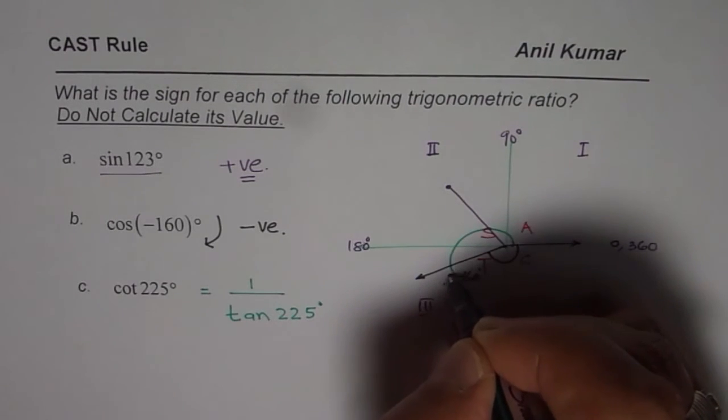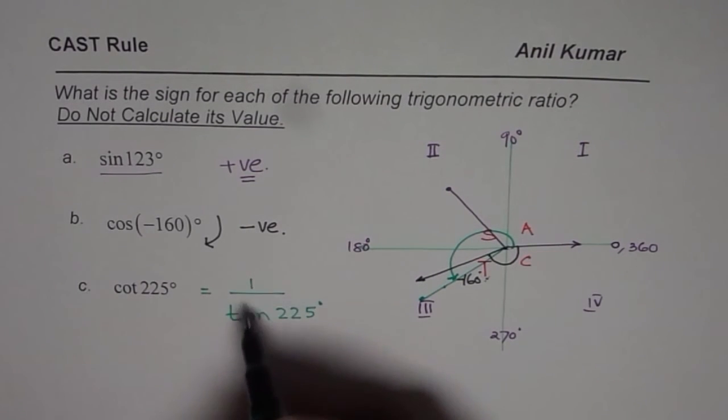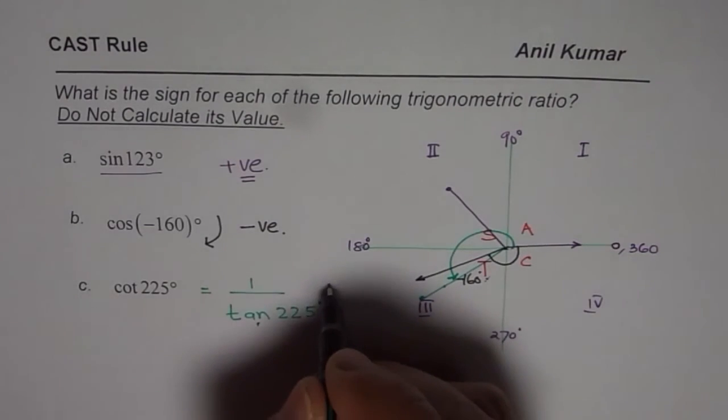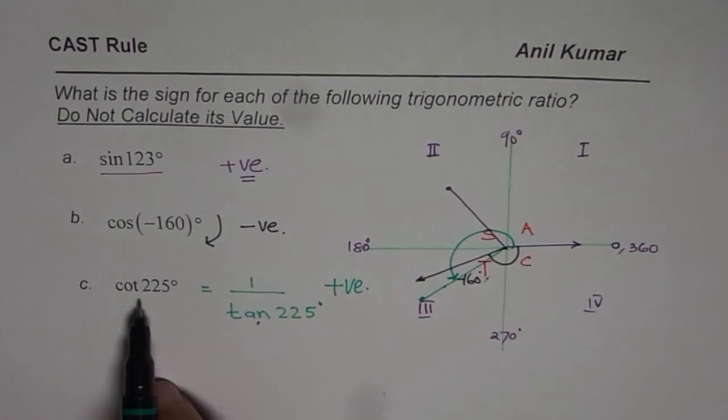If you are in quadrant 3, tan is positive. So 1 over tan will be positive also. So cotangent will be positive. So we are expecting a positive sign when the angle is 225 degrees for cotangent also. So that is how we can actually apply the CAST rule and figure out whether we are expecting a positive answer or a negative answer.